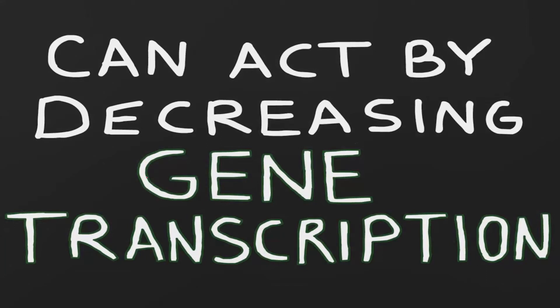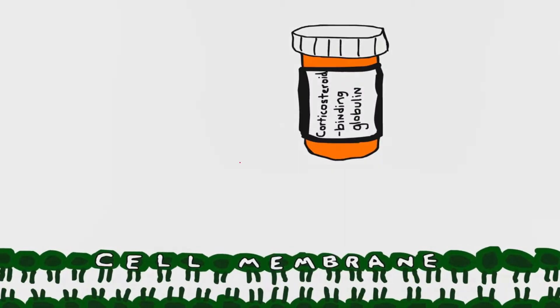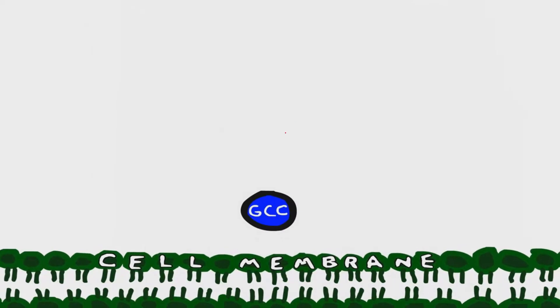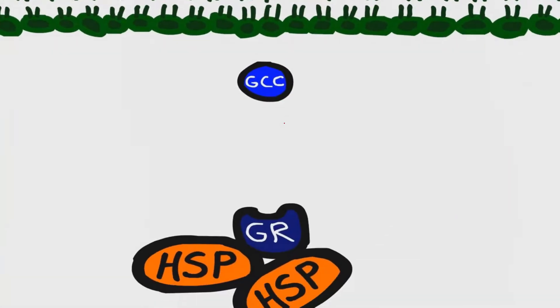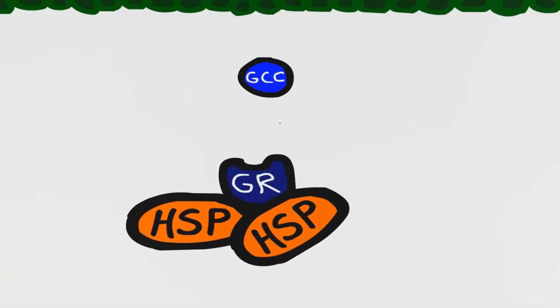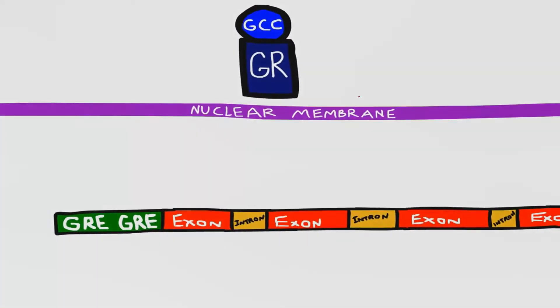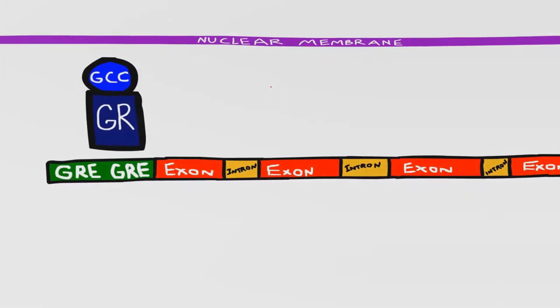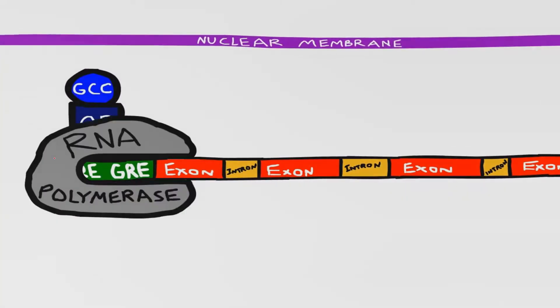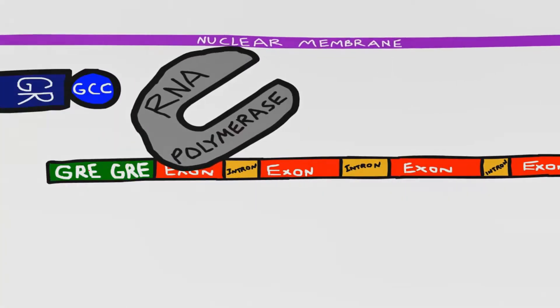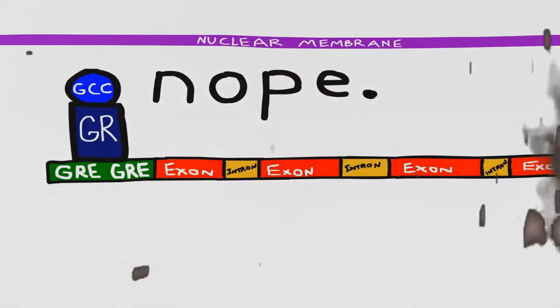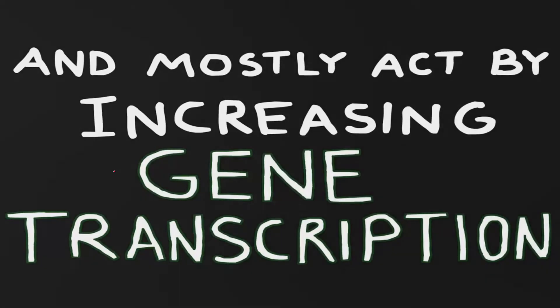This is a review of the mechanism of action of glucocorticoids. These drugs can act by decreasing gene expression. The glucocorticoid is released from a corticosteroid binding protein, enters the cytoplasm, and interacts with the glucocorticoid receptor. This changes the shape of the receptor, releases the heat shock proteins, and the glucocorticoid receptor can interact with the glucocorticoid response element. This inhibits gene transcription and inhibits the production of various proteins.